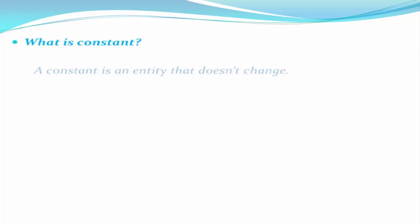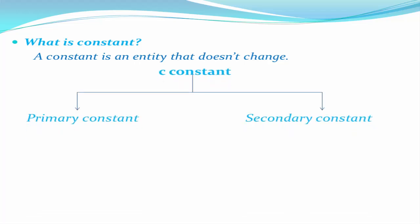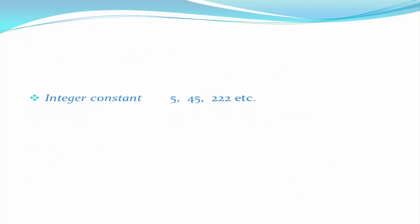What is a constant? A constant is an entity that doesn't change. C constants are classified into two categories: primary constants and secondary constants. Primary constants are classified into integer constant, real constant, and character constant. Secondary constants are classified into array, pointer, structure, union, etc. Here we discuss only primary constants.